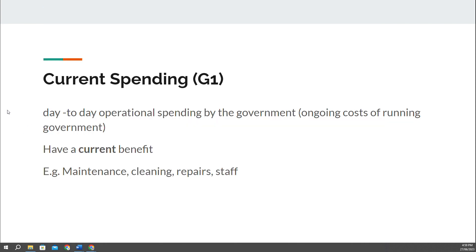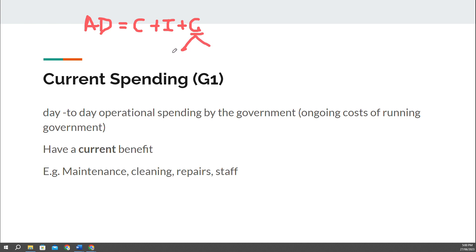So let's get into VCAA's types of government spending. Up until this point, we've been saying aggregate demand — the total expenditure in the economy — is C (consumption or household spending), I (investment or business spending), and G (government spending). Now we're going to break that government spending into two types: G1 and G2. G1 is what we call current spending.